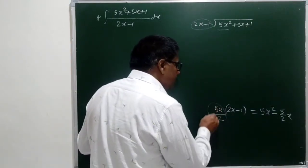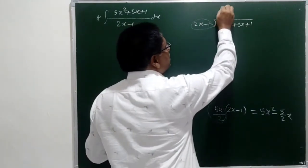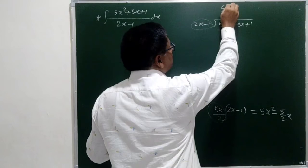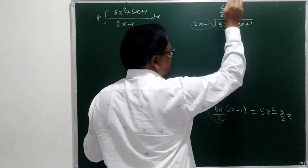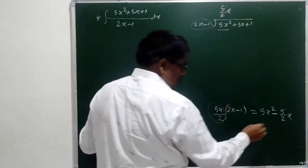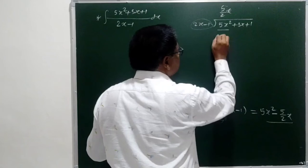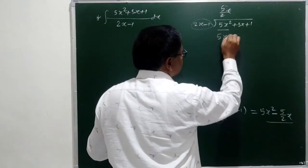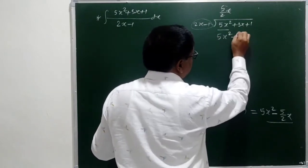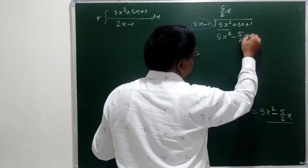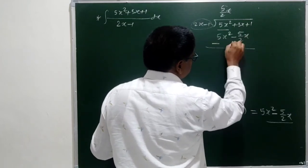Therefore, 5x by 2 is the quotient. And this term we are supposed to write here: 5x squared minus 5 by 2x.